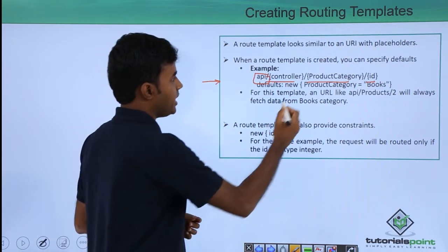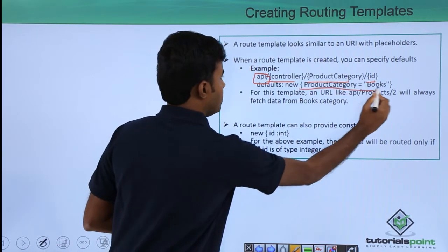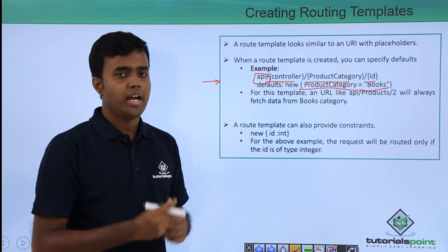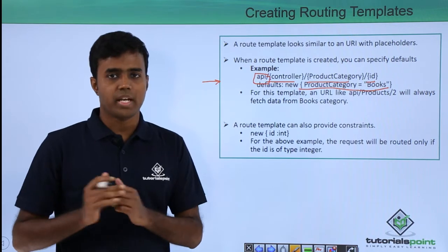And then I am also saying that the product category defaults to books, which means that if the user does not give any product category, it will always come to the books category section.